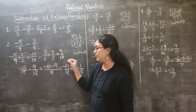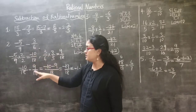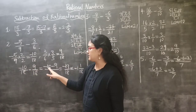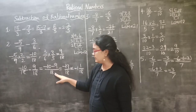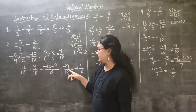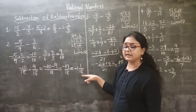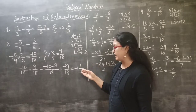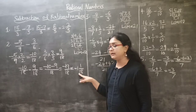So the next step is minus 10 by 18 minus 9 by 18. Writing the numerators together: minus 10 minus 9 by 18. Since both numbers are negative, we add them, giving minus 19. So the answer is minus 19 by 18, which converts to the mixed fraction minus 1 and 1 by 18, because 18 ones are 18, and 18 plus 1 is 19.